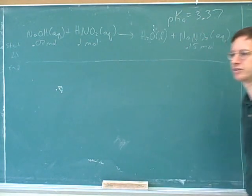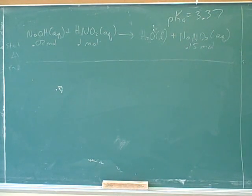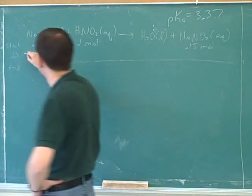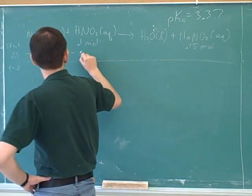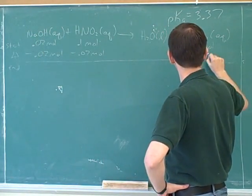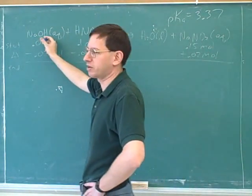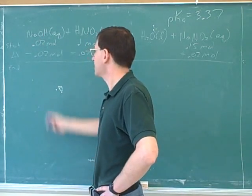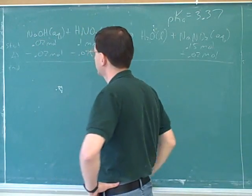So what will be our changes? Minus 0.02, minus 0.02, and plus 0.02. That's right, this is a limiting reagent. The reaction is to stop once we run out of the base. And then what are our final amounts? 0.08 and 0.17.